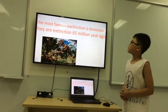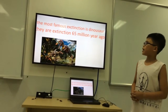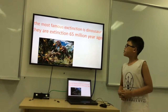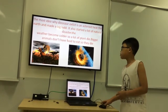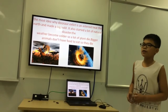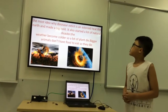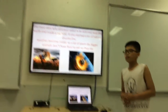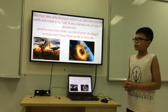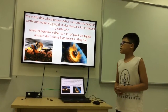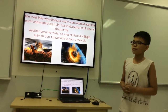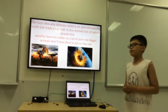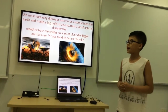The most famous extinction is dinosaurs. They went extinct 65 million years ago. The most widely accepted theory is that an asteroid hit the earth and caused a big fall. It also started a lot of natural disasters. The weather became colder. There was a long period of time where animals didn't have food to eat, so they died.